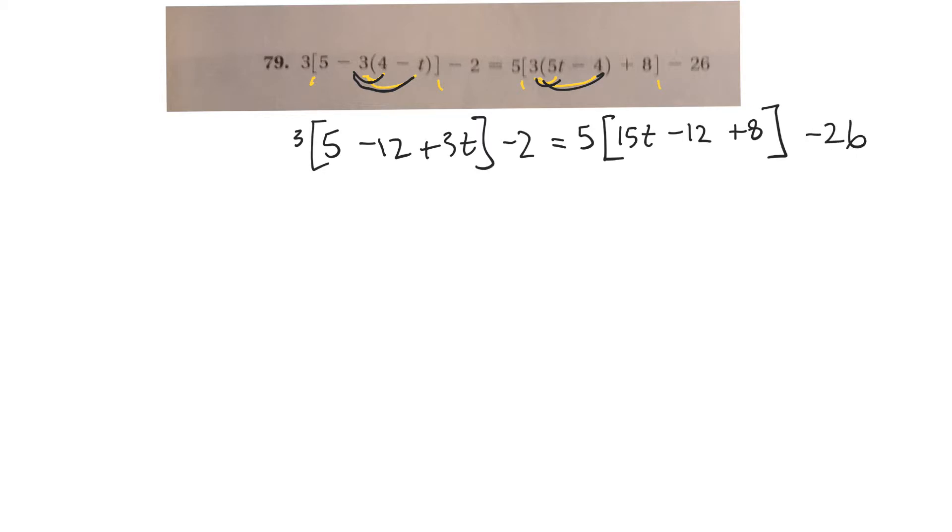So now outside of this bracket, I've got a number. So I can either collect things in there first or I can multiply the 3 first. Probably combining stuff inside makes more sense. So 5 take away 12 is going to be a negative 7 plus 3t. Minus 2 equals. Same thing here. I'll combine those two first.